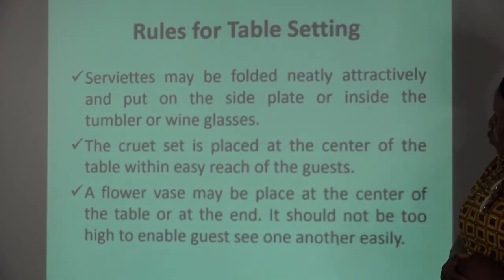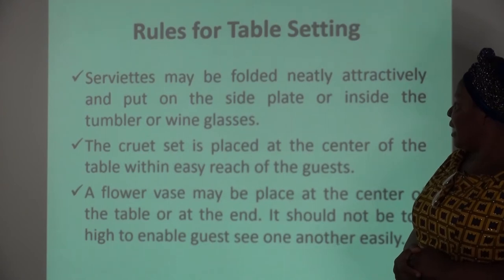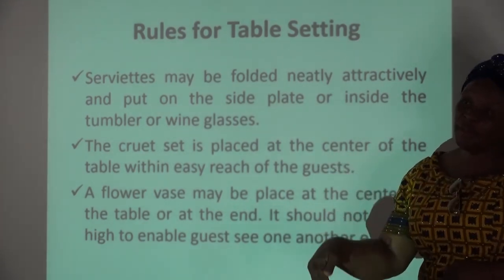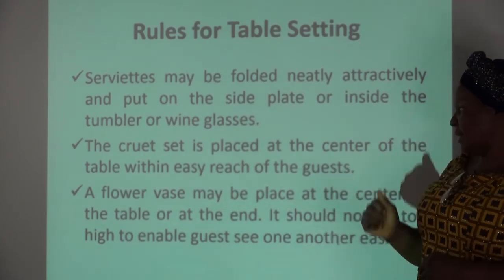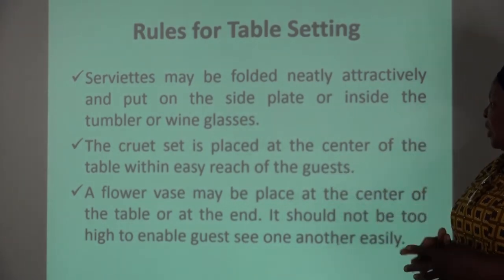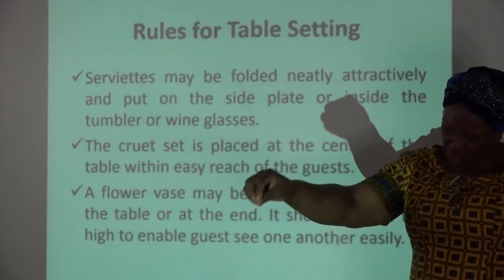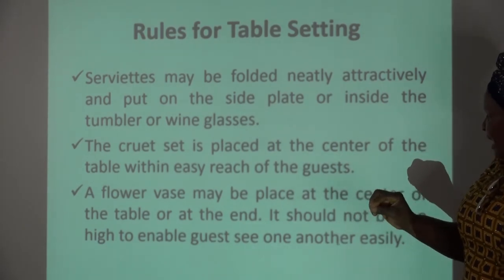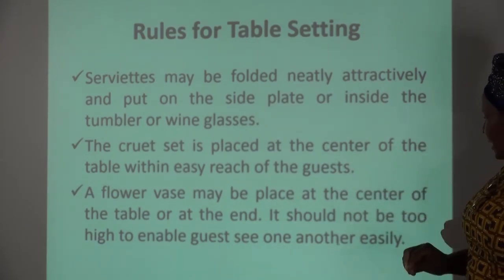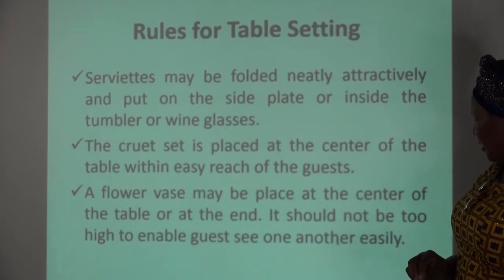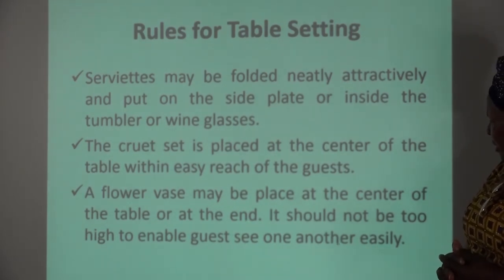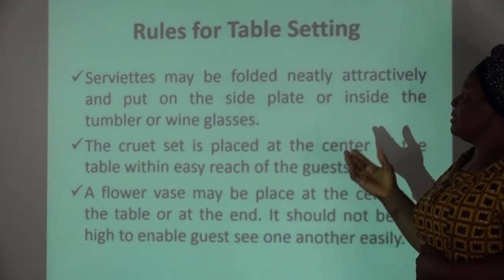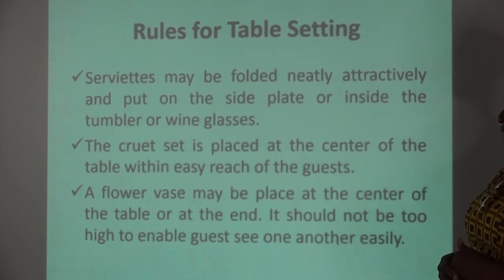Serviettes may be folded neatly and attractively, and put on either side or in the drinking vessel or wine glasses. The cruets should be placed at the center for easy reach of the guests. A flower vase may be placed at the center of the table or at the end, and it should not be too high to enable guests to see one another. These are the rules for setting the table.